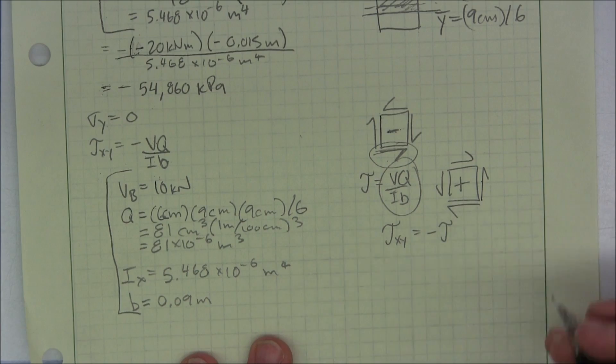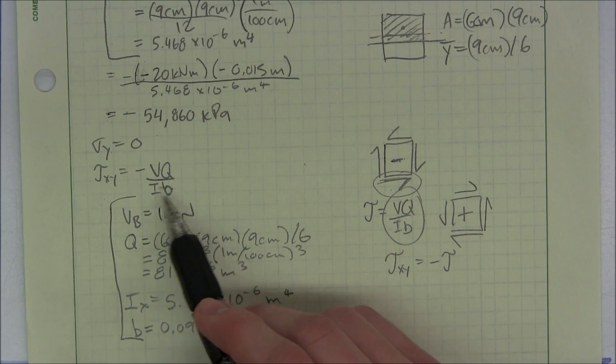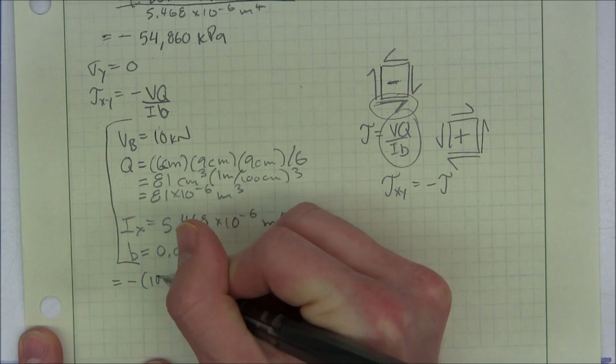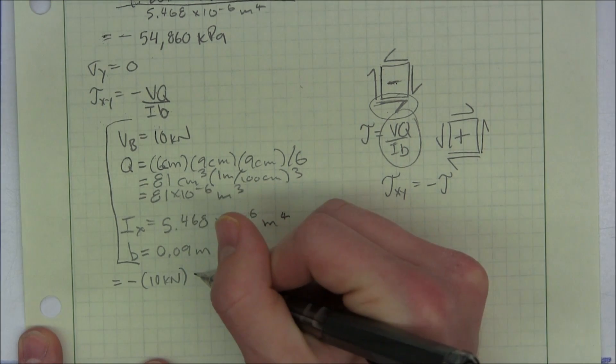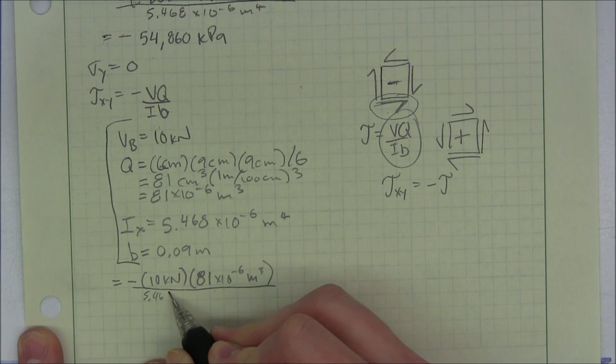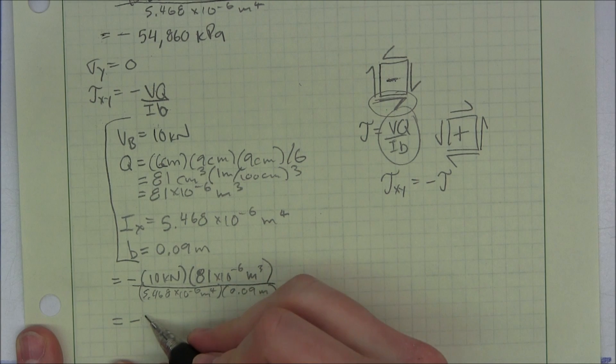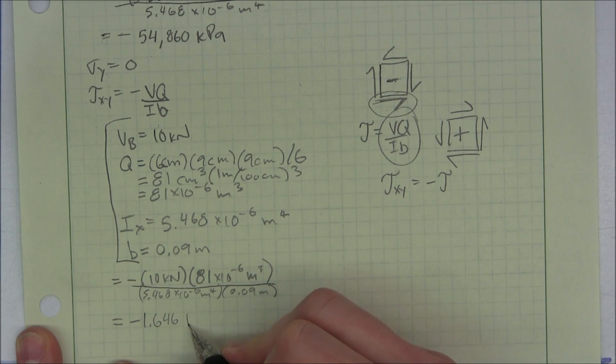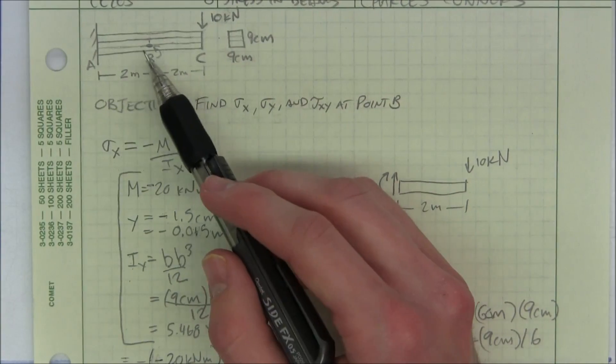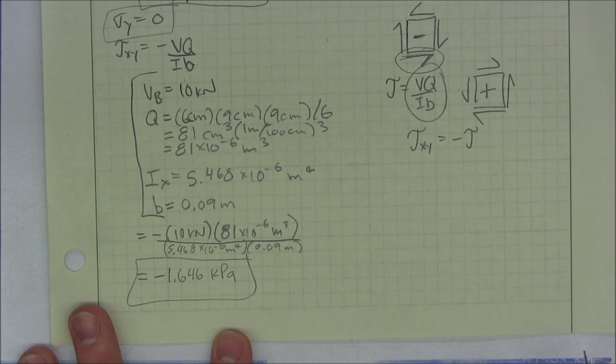For the torque equation, it's just a regular positive, but we don't have that in this problem. So, when we're talking about VQ over IB, tau xy equals the negative of that equation. Okay, let's plug it in. Negative 10 kN times 81 times 10 to the negative 6 meters cubed, 5.468 times 10 to the negative 6 meters to the fourth, 0.09 meters, and that equals negative 1.646 kilopascals. And so, we're looking for our original stress element at B. We have our sigma x, sigma y, and tau xy. Then we can do whatever math from there.